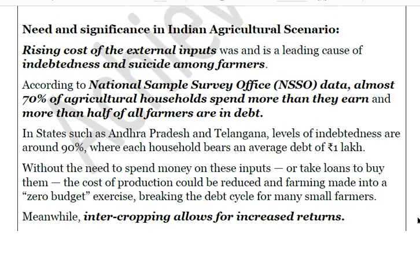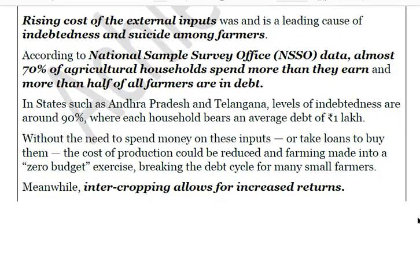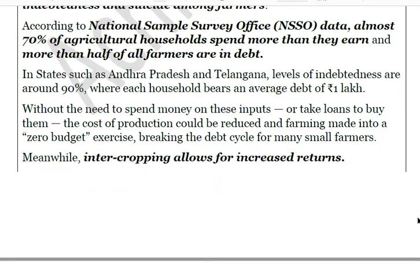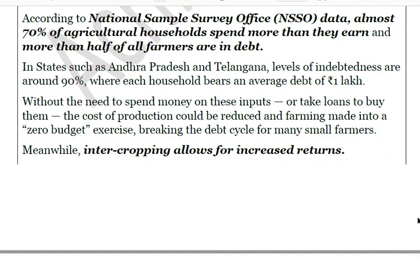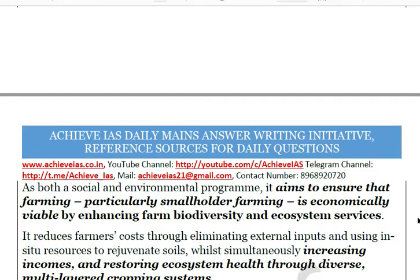Almost more than half of India's farmers are in debt. States such as Andhra Pradesh and Telangana have levels of indebtedness around 90 percent, with each household bearing an average debt of one lakh rupees. Since zero budget natural farming requires no spending on external inputs or loans to buy them, the cost of production is essentially zero, helping break the debt cycle — especially for small farmers who are particularly affected.